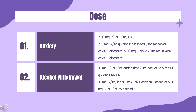Seizure disorder: For acute treatment of intermittent, stereotypic episodes of frequent seizure activity (i.e., seizure clusters, acute repetitive seizures) distinct from a patient's usual seizure pattern. Used adjunctively in convulsive disorders, although it has not proved useful as sole therapy. 2 to 10 mg PO Q6–12HR; intranasal spray 0.2 mg/kg intranasally as a single dose.